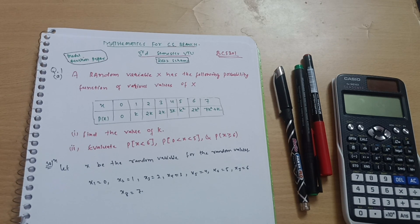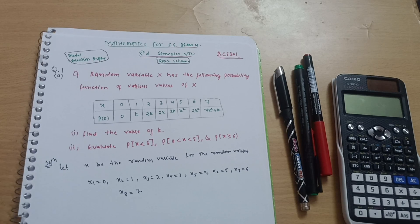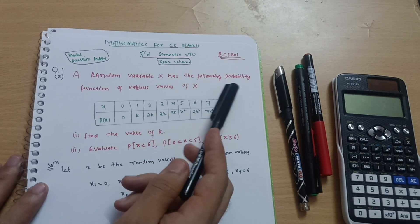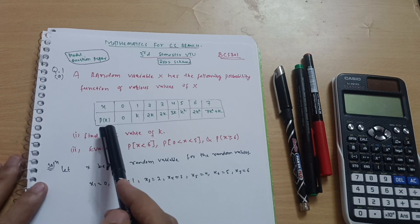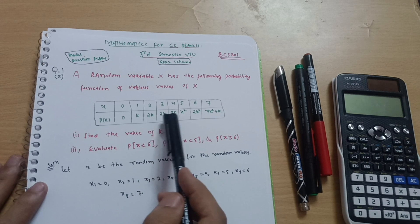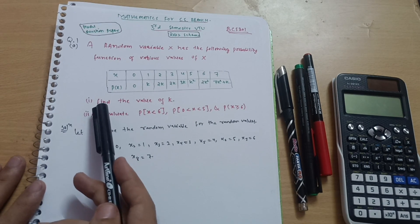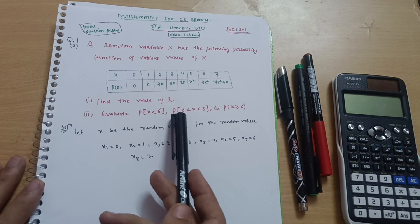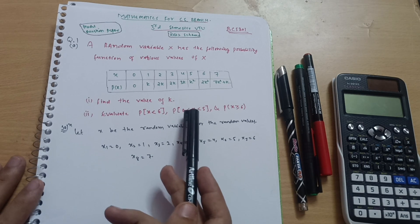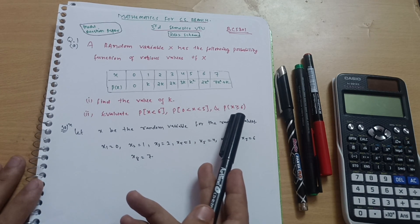Welcome back. This is Mathematics for CSE, third semester VTU — a model question paper problem on probability. The question: a random variable x has the following probability function for various values of x, with probabilities 0, k, 2k, 2k, 3k, k², 2k², and 7k²+k. We have to find the value of k, and evaluate P(x<6), P(0<x<5), and P(x≥6).